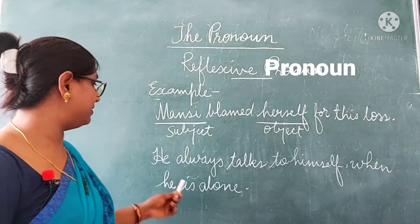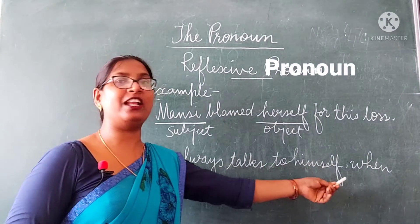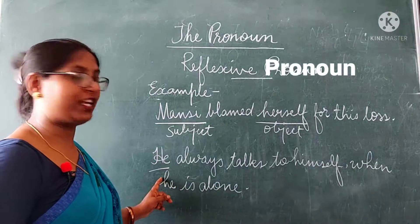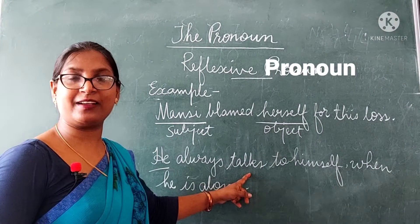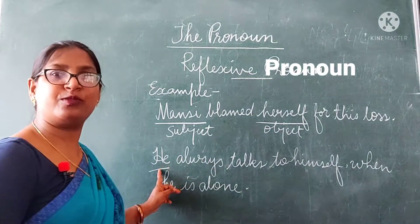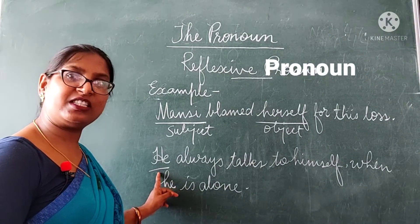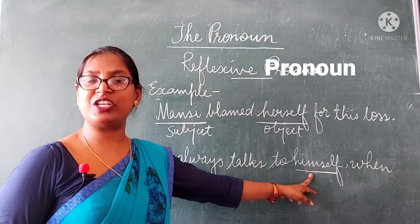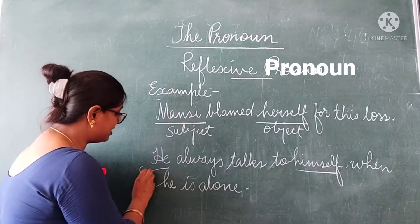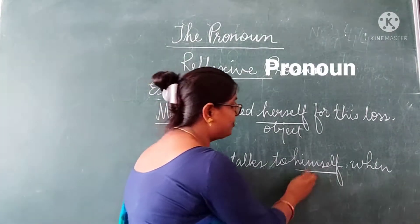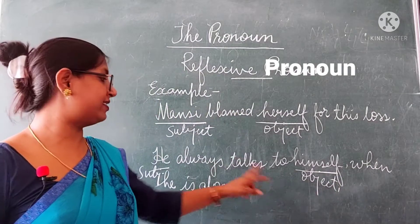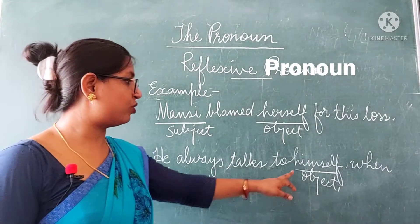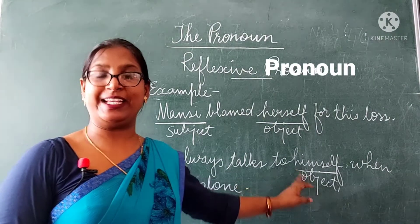Let's look at the next example: "He always talks to himself when he is alone." The subject is "he." He always talks — the action of talking is performed by the subject "he," so he is the doer of the action. "Himself" is the object. Here we can see the subject and the object in this sentence are the same person, so "himself" is the reflexive pronoun.